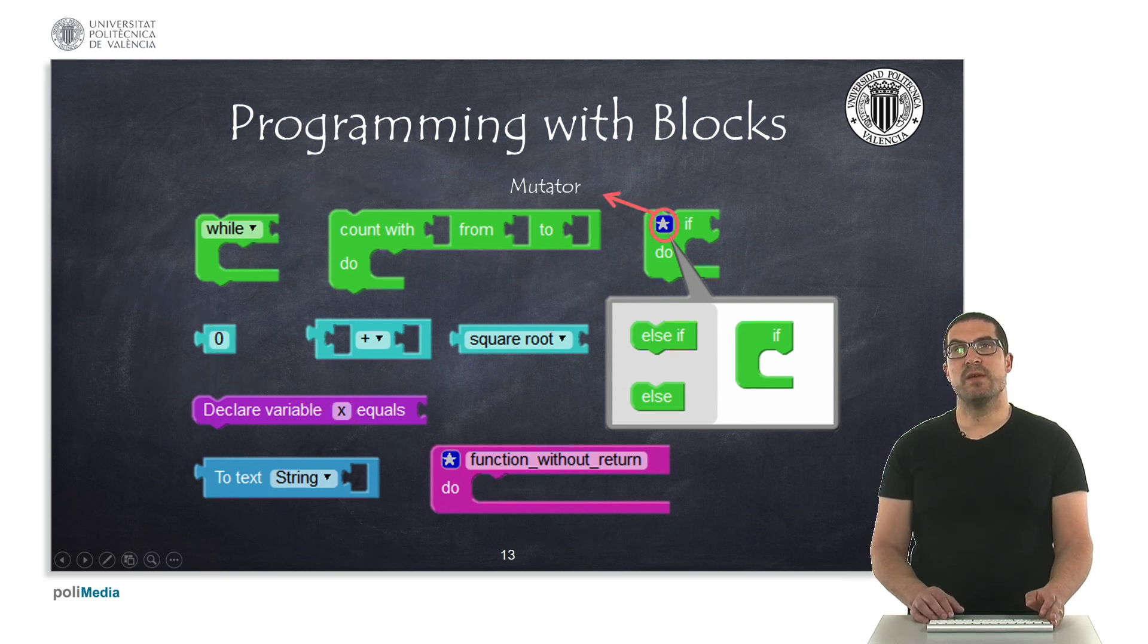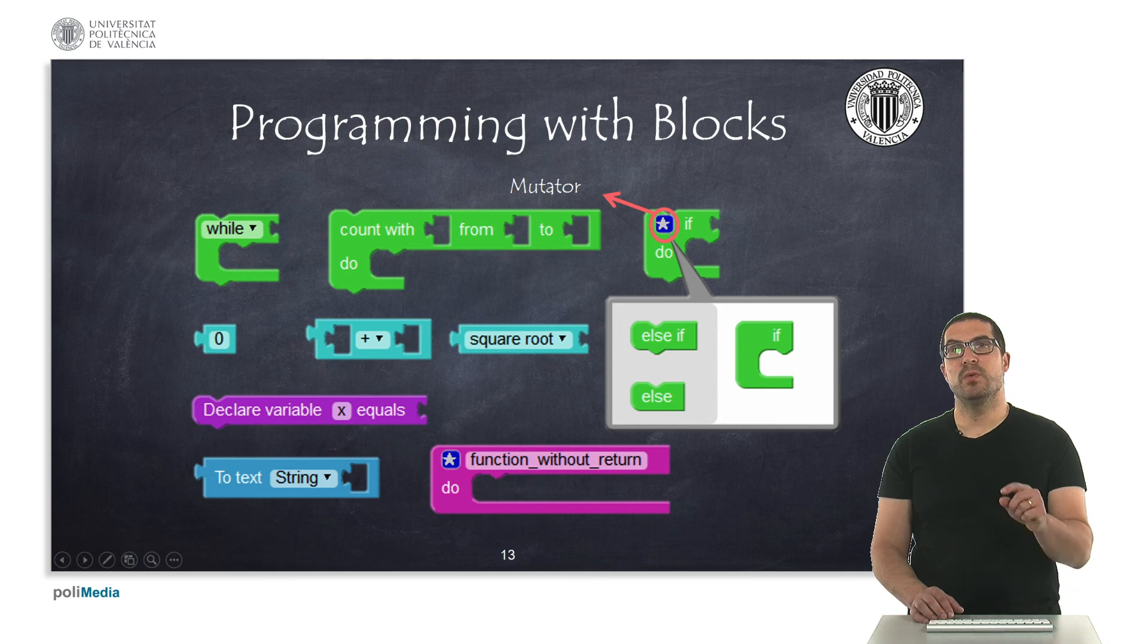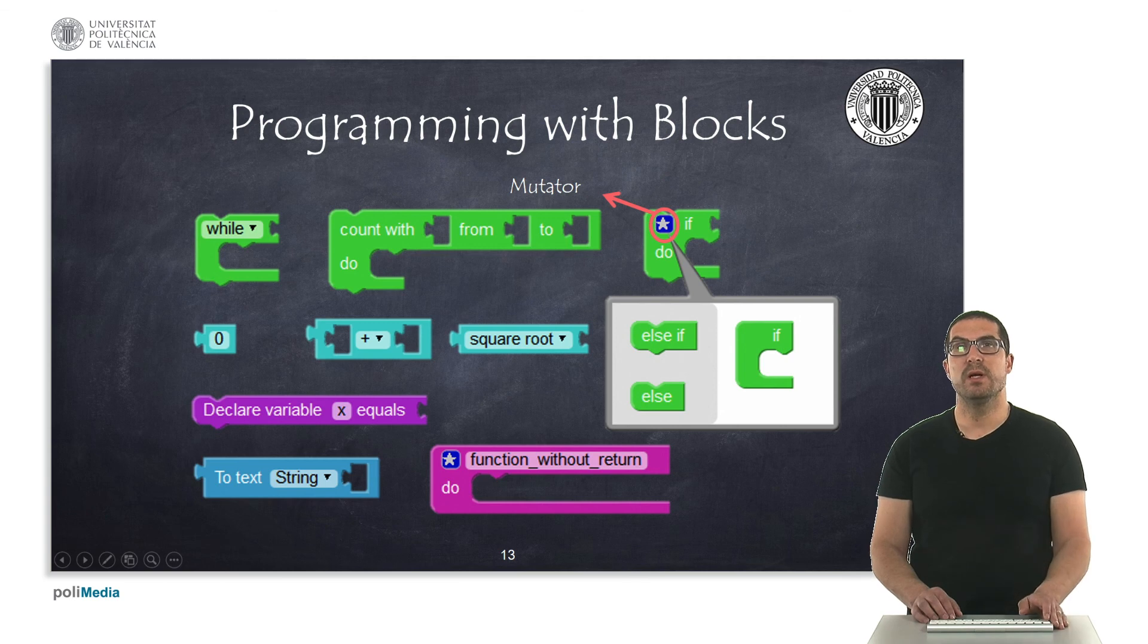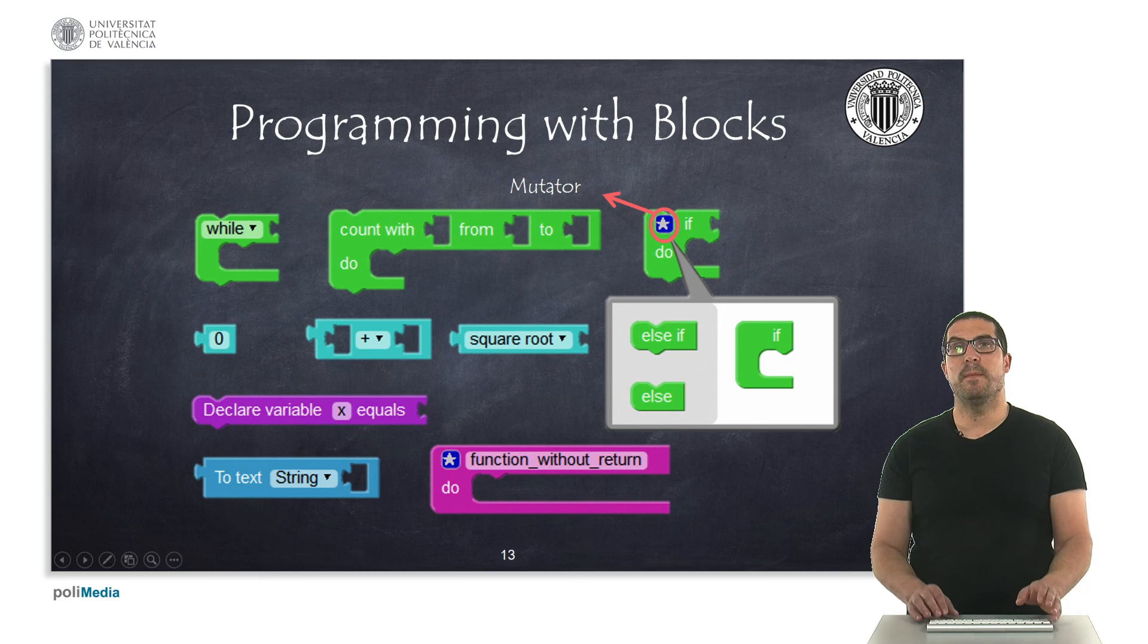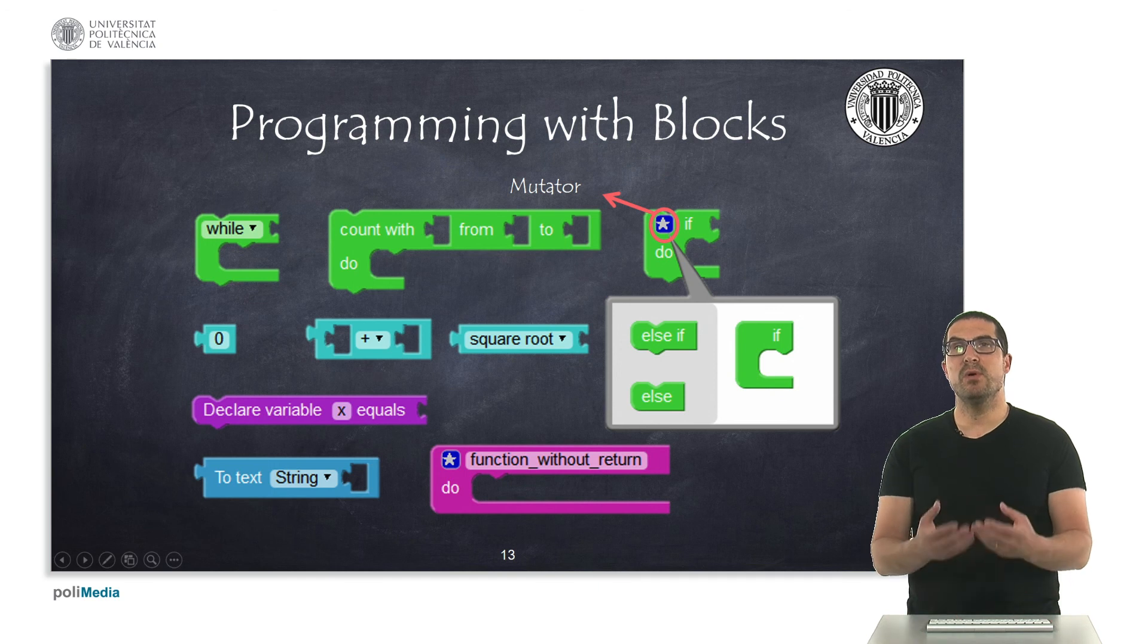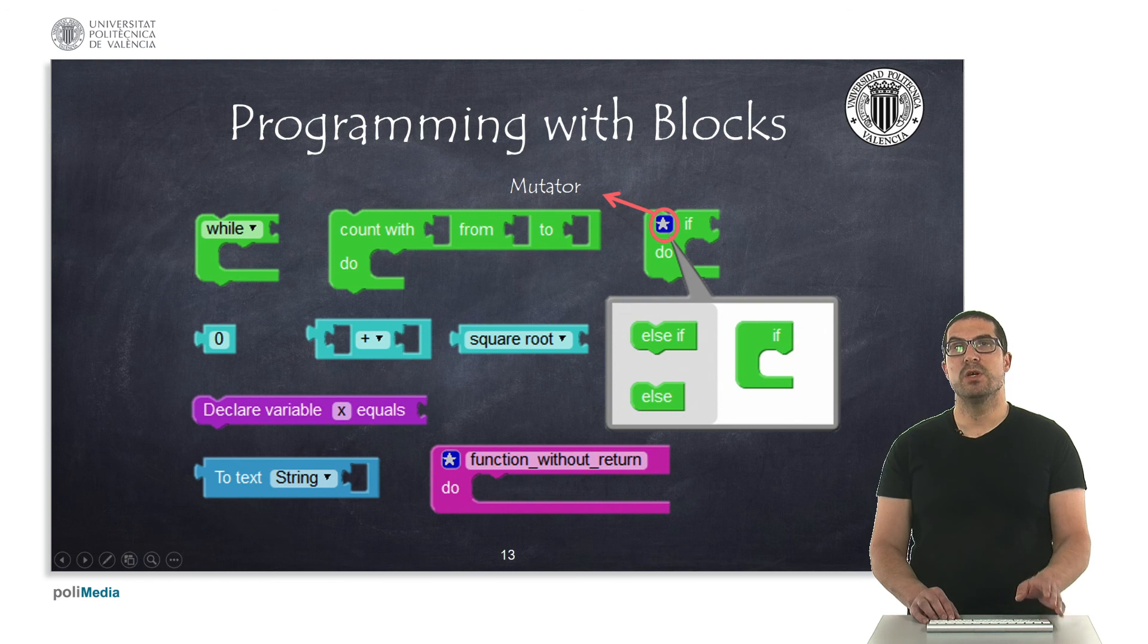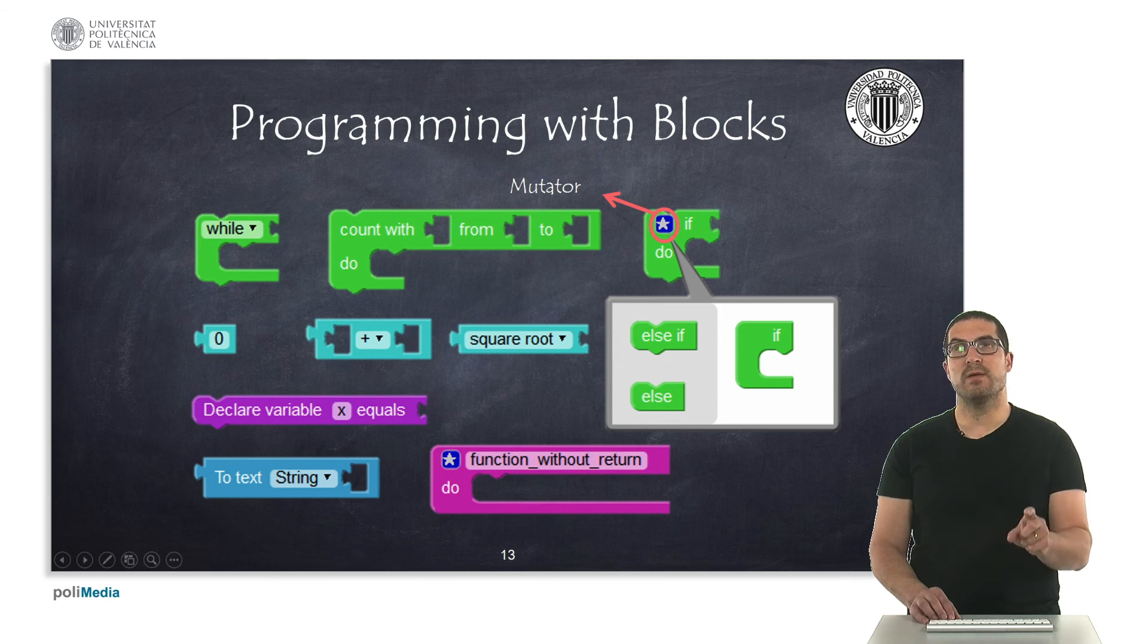Finally, some instructions have a mutator. A mutator, you will recognize it with this icon on the top left corner. Once you click on it, they will deploy another window in which you can drag and drop different options of this instruction, and this will modify the aspect of your actual instruction. For instance, in an if instruction, you can create more cases by adding else-if instructions and by adding a final else instruction.